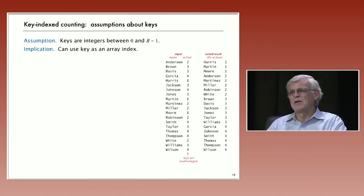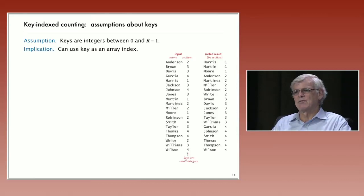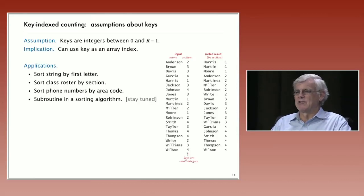And it's representative of a fairly common situation in sorting applications where it happens to be that the keys that we're using to sort are small integers. So in this case, this is supposed to mimic an application where there's students and they're assigned to sections. There's not too many sections. And we want to sort according to the section number. And that's a small integer. And the implication of knowing that the key is a small integer is that we can use the key as an array index. And by knowing that the key is an array index, we can arrange for a fast sort.